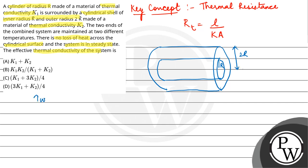For resistances in parallel, 1 upon R is equal to 1 upon R1 plus 1 upon R2, where R1 is the thermal resistance of the cylinder.